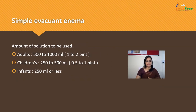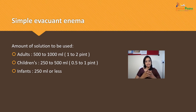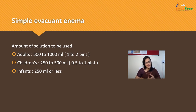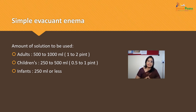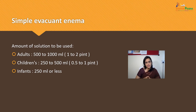The amount of solution used for simple evacuent Enema: for adults it is 500 to 1000 ml, for children 250 to 500 ml, and for infants 250 ml or less. This is the volume of solution used for simple evacuent Enema.